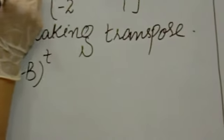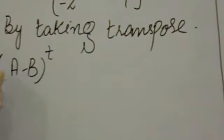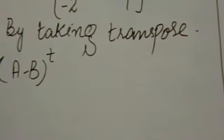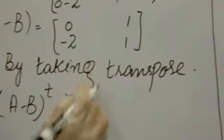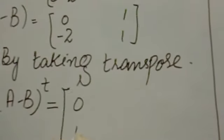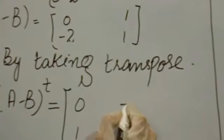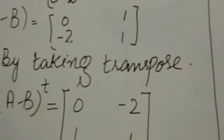Transpose - transpose column ko rows mein change karte hain. First row, first column: 0, 1. Second row, second column: minus 2 and 1. Okay.